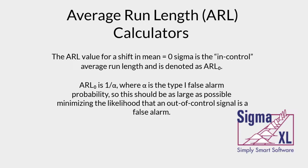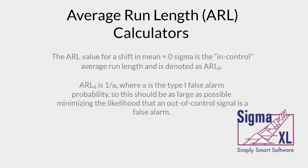The ARL value for a shift in mean equal to zero Sigma is the in-control average run length, denoted as ARL zero. ARL zero is one over alpha, where alpha is the type 1 false alarm probability, so this should be as large as possible, minimizing the likelihood that an out-of-control signal is a false alarm.